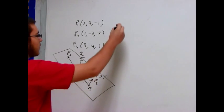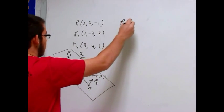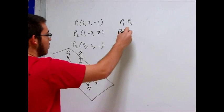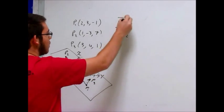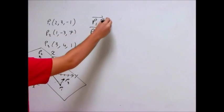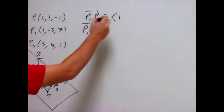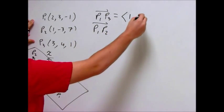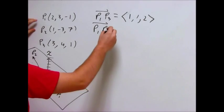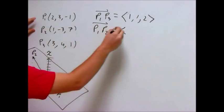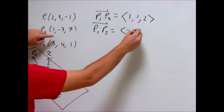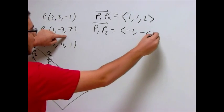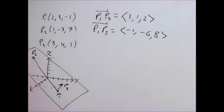And so what we can do is we can find the cross product of these two vectors to find a normal vector to the plane. And so the vector P1, P3, and the vector P1, P2, and what are they? So if you want to P3, this is plus one, plus one, and then plus two. And this one is minus one, minus six, plus eight.